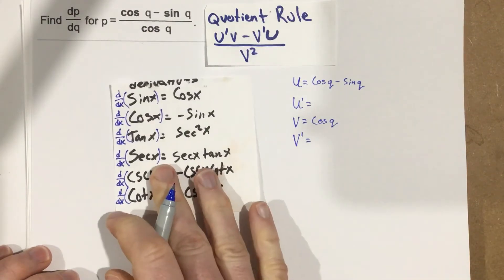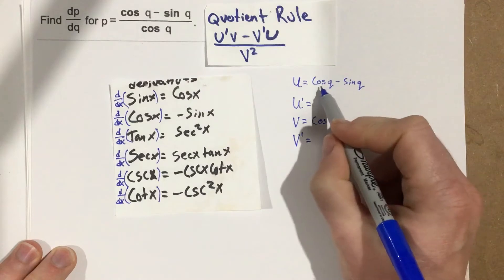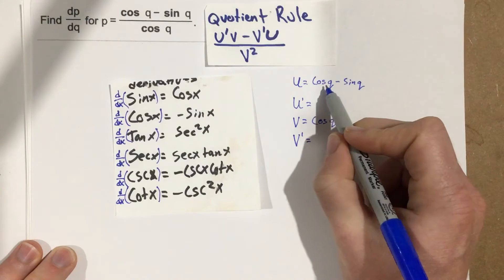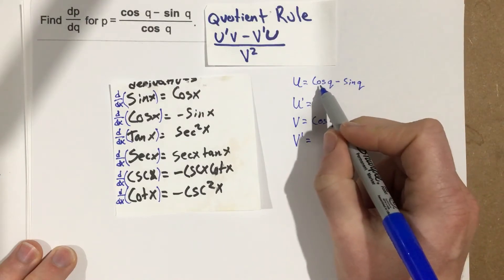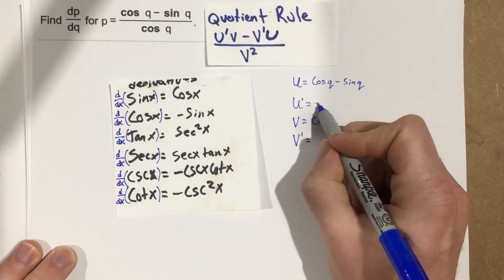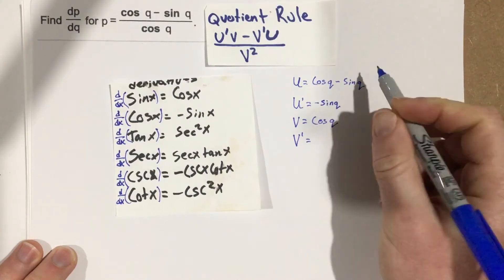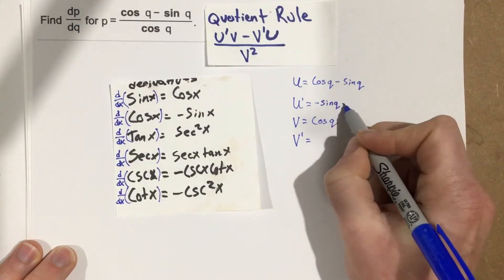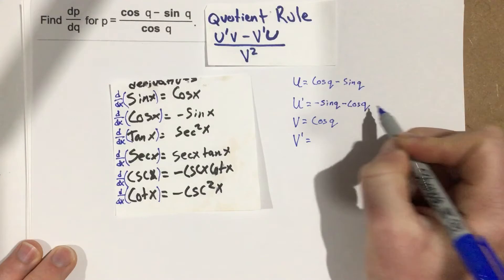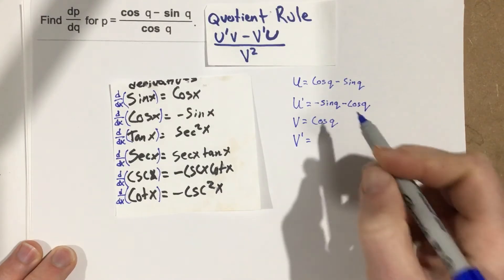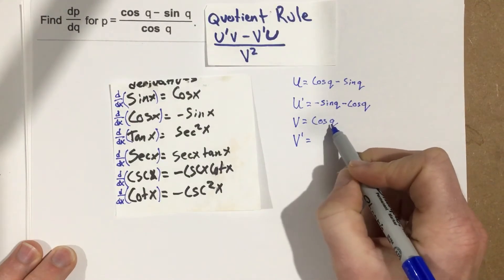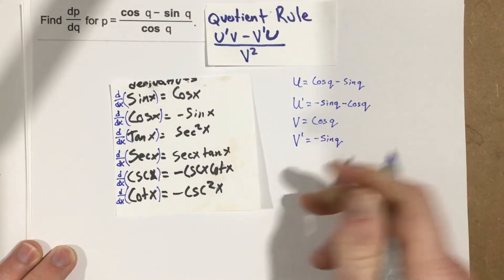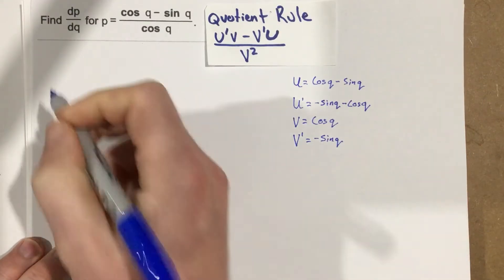Let's pull out our trig derivatives. Because of the subtraction, we can find U prime essentially by differentiating each part separately. The derivative of cosine Q is negative sine Q, and the derivative of sine Q is cosine Q, so U prime is negative sine Q minus cosine Q. And V prime, the derivative of cosine Q, is just negative sine Q.